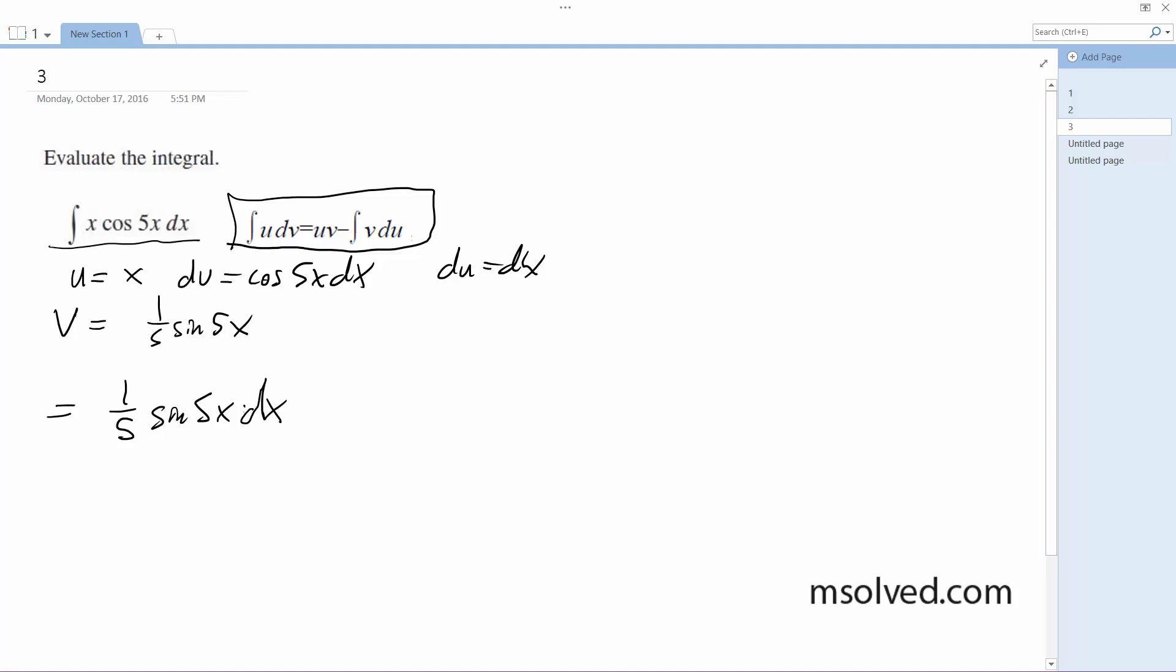and actually this is x out in front too, because it's this whole thing, the v times u, minus the integral of 1/5 sine of 5x dx.